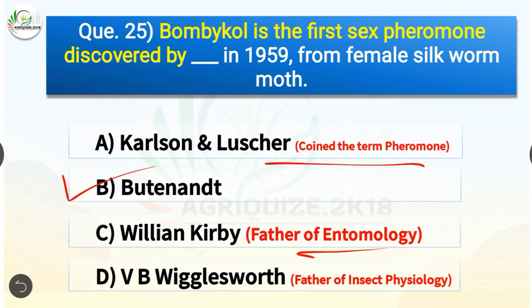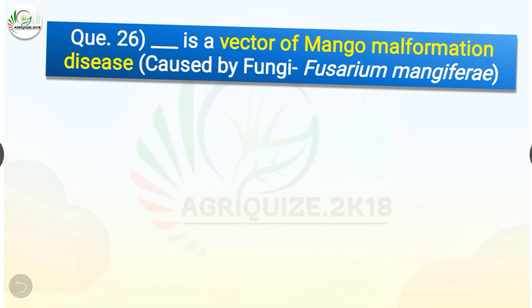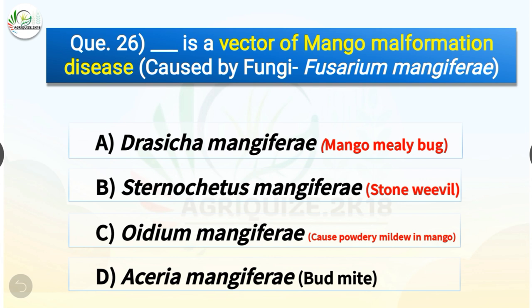Question number twenty-six: which is the vector of mango malformation disease caused by fungi Fusarium mangiferae? Options are Drasica mangiferae, Sternochetus mangiferae, Oidium mangiferae, or Aceria mangiferae. The correct answer is option D, Aceria mangiferae (bud mite). Sternochetus mangiferae is the stone weevil, and Oidium mangiferae causes powdery mildew in mango.